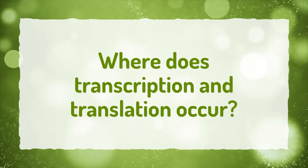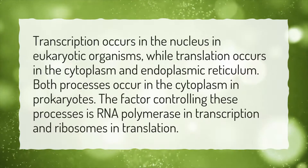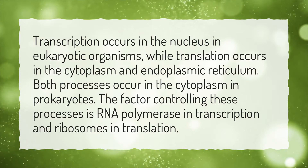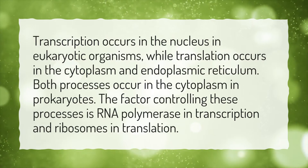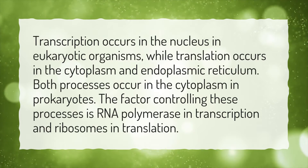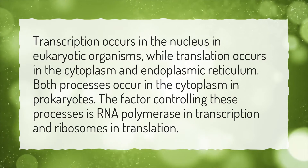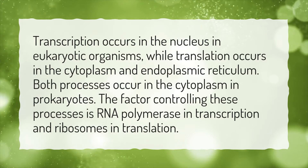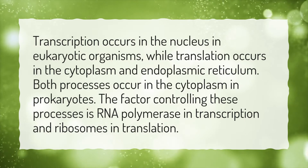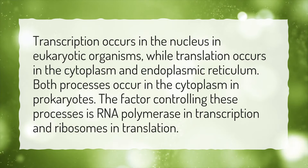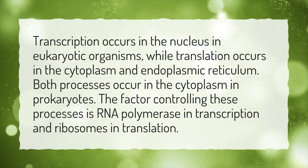Where does transcription and translation occur? Transcription occurs in the nucleus in eukaryotic organisms, while translation occurs in the cytoplasm and endoplasmic reticulum. Both processes occur in the cytoplasm in prokaryotes. The factor controlling these processes is RNA polymerase in transcription and ribosomes in translation.